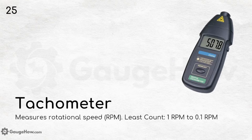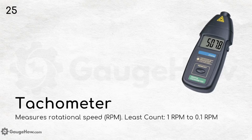Tachometer measures rotational speed or RPM. You can see it in garage shops, at wheel-alignment locations, and in automobile industries when fitting wheels to vehicles. It is used for many purposes but is most common in the automotive industry. The least count is 1 RPM, and up to 0.1 RPM in some digital tachometers.